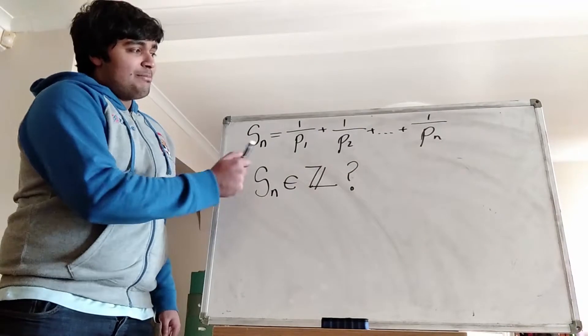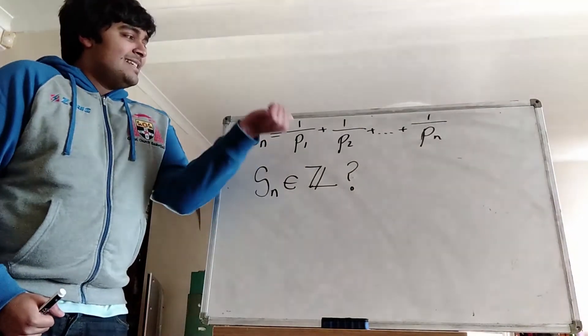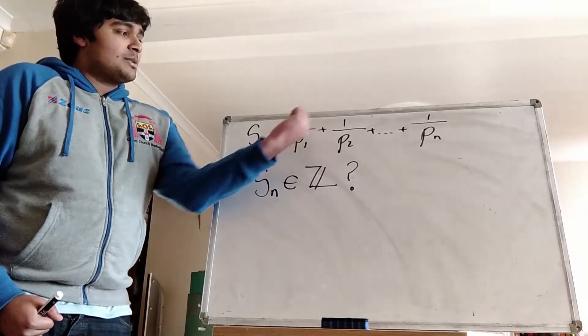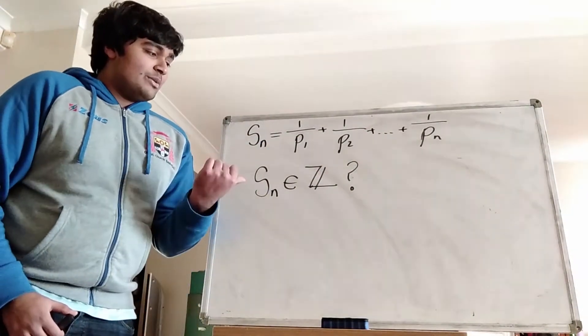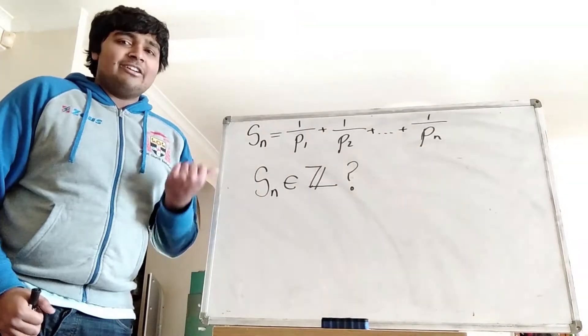Today I'm going to be doing something similar. I'm going to be looking at the partial sums. So Sn is 1 over the first prime number plus 1 over the second prime number, and so on, all the way down to 1 over the nth prime number. And what we want to know is, is Sn ever an integer?